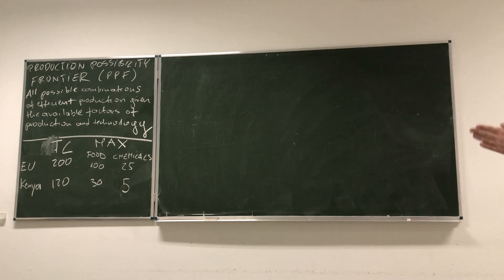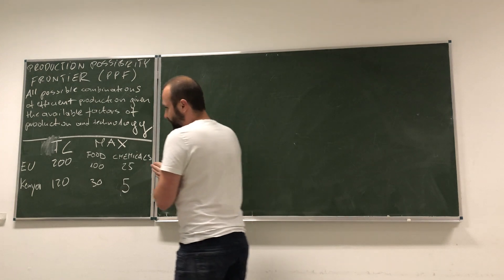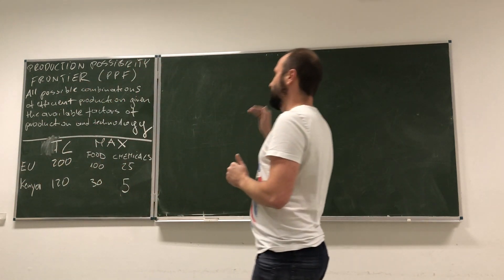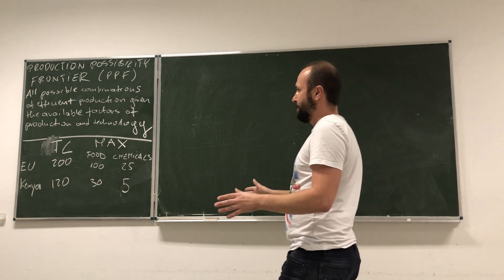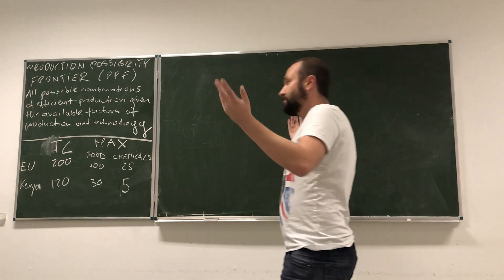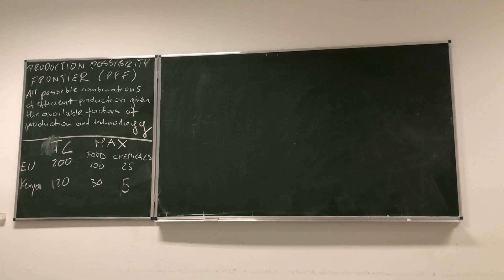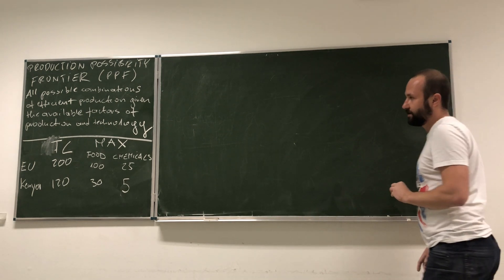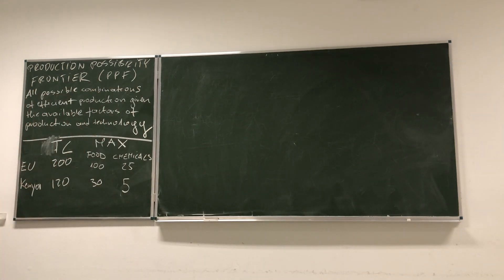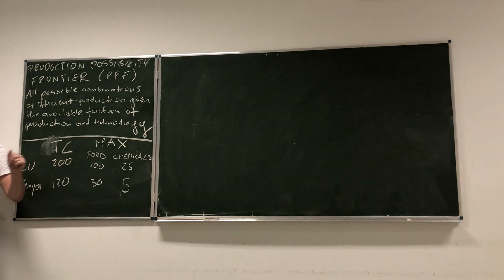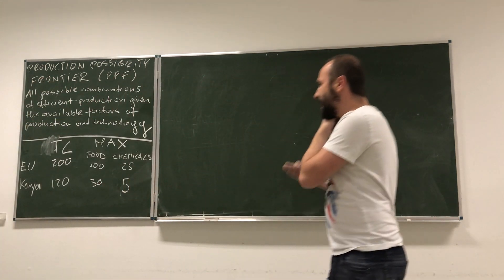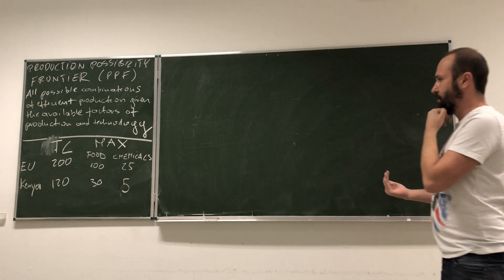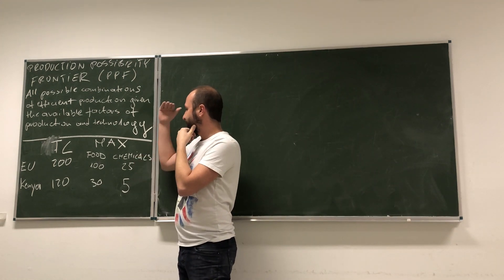What does it mean? The production possibility frontier tells us how much of two goods we can make, assuming that we are using the entire labour that we've got. So if we now have labour and we want to create this production possibility frontier, first we need to assume that we have some amount of workers. We are assuming that the European Union has 200 units of labour and Kenya has 120 units of labour. Taking those, we can calculate how much food and chemicals at most we can produce.